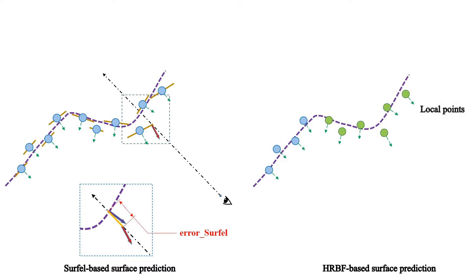First, a local HRBF surface is reconstructed from the local points, which is quite robust to noise.